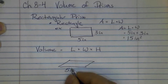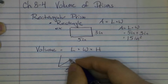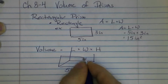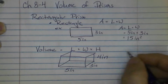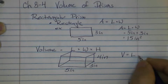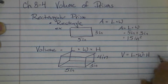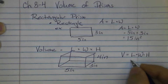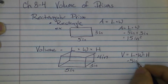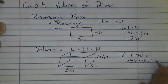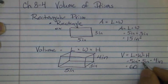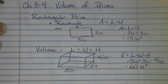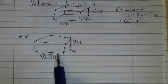We'll use a base of 5 inches by 3 inches and make it three-dimensional, giving it a height of 4 inches. The volume equals length times width times height, so we fill in all dimensions: 5 inches times 3 inches times 4 inches. 5 times 3 times 4 is 60, and inch times inch times inch gives us inches cubed, so the volume is 60 inches cubed.